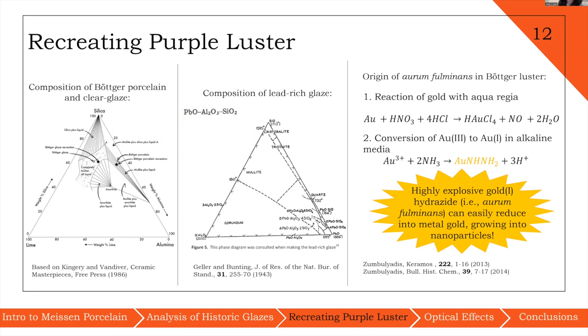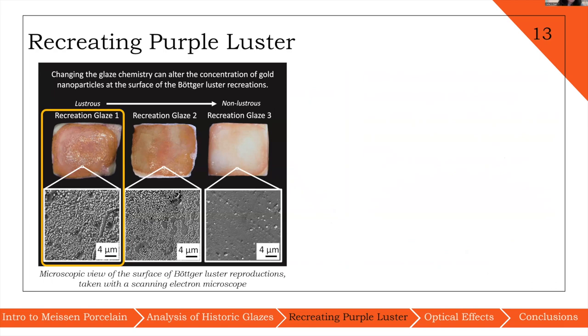These are some of our results. As you can see, we have examples of purple luster in some of these recreations. If we look closely with scanning electron microscopy, we can link luster to a similar surface microstructure that has gold nanoparticles of different sizes.